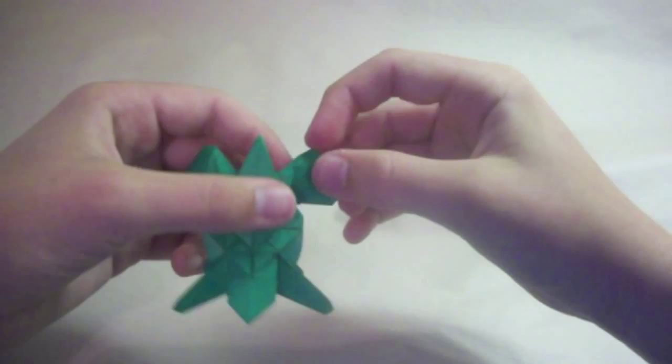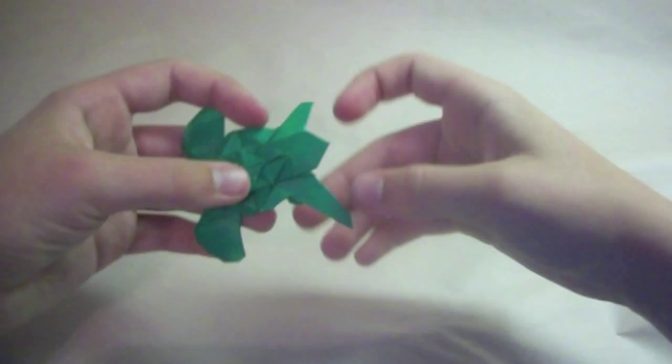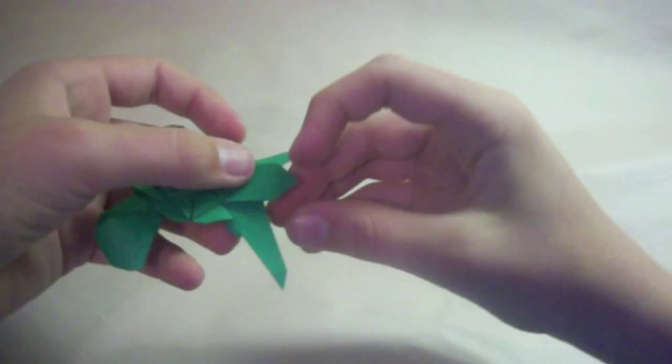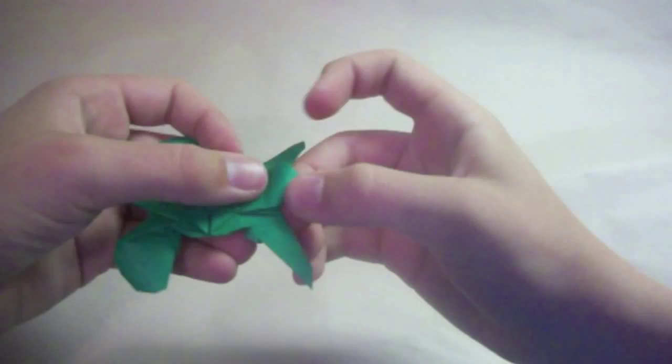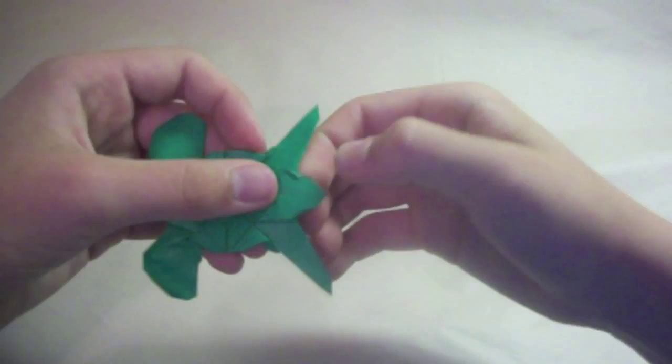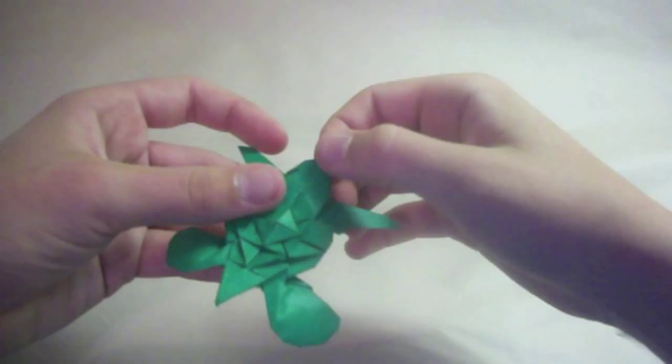And now we'll begin some shaping. First we're going to make eyes on the head just by folding these corners in. Then round off the tip if you want to. Sometimes I just leave it, but I think it looks a little bit better when it's rounded off like that.